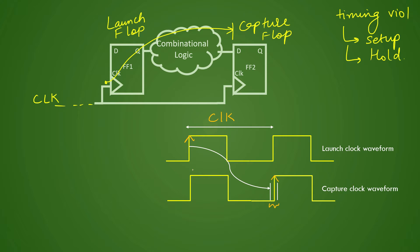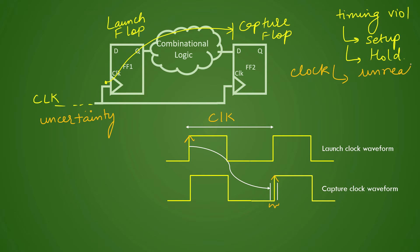This window represents your uncertainty in the clock. In the placement stage, the clock is not real — it is unreal, or you can say a modeled clock. It only has the information about your clock period, and whatever uncertainty you specify represents your skew and your jitter in the clock.